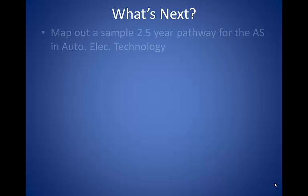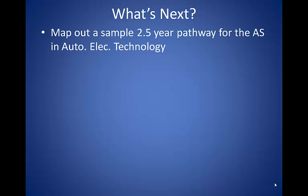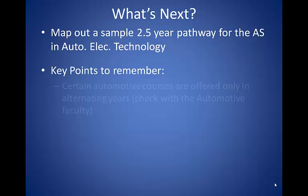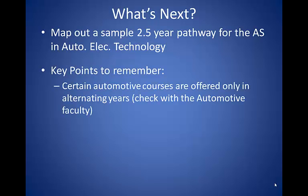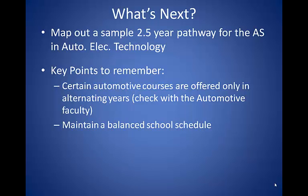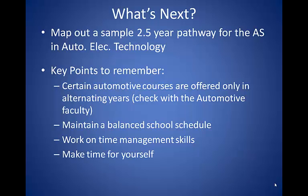What's next? Let's map out a sample two-and-a-half-year pathway for the AS degree in Automotive Electronics Technology. Key points to remember: certain automotive courses are offered only in alternating years — check with the automotive faculty. Maintain a balanced school schedule so that you are not taking tough classes all in one semester. Work on time management skills, keep track of upcoming deadlines, and don't wait until the last minute to complete assignments. Make time for yourself — to reduce stress, exercise, do yoga, etc.